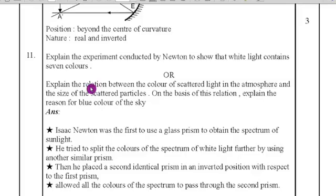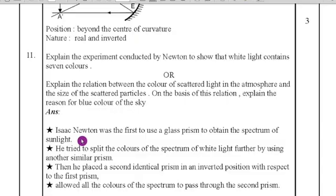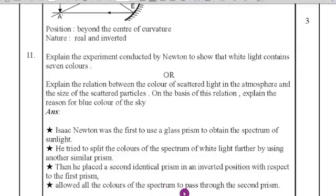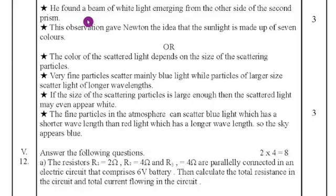Eleventh question: explain the experiment conducted by Newton to show that white light contains seven colors. Sir Isaac Newton was the first to use a glass prism to obtain the spectrum of sunlight. He tried to split the colors further using another similar prism, then placed a second identical prism in an inverted position with respect to the first. Allowing all the colors to pass through the second prism, he found a beam of white light emerging from the other side — giving Newton the idea that sunlight is made up of seven colors.